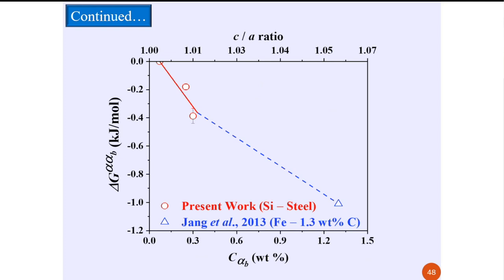When bainitic transformation stops, the carbon content of untransformed austenite will be higher than T0, consistent with a new T0 defined by equilibrium between body-centered tetragonal and face-centered cubic structure. From our experimental results showing the shift in carbon solubility in ferrite and T0, we back-calculated the free energy difference between cubic and tetragonal ferrite. The three red points are from our calculations; the blue point is from Jang and Madeshiya's DFT calculations. They show a consistent trend.